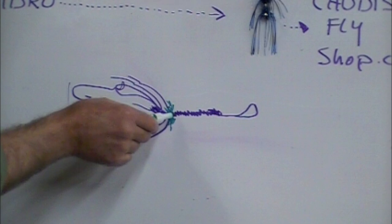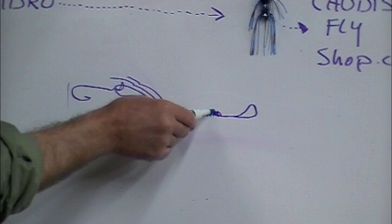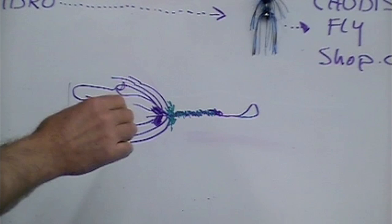These flies are characterized by a fairly narrow, slim, slender, easy to sink tinsel body. So you wrap that on.